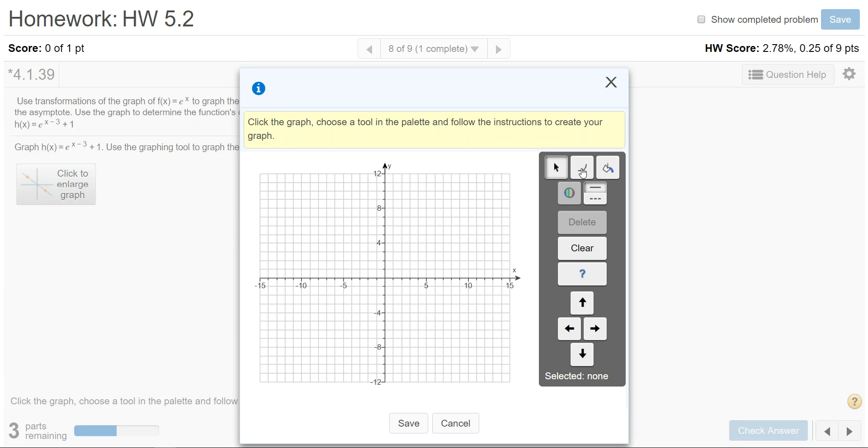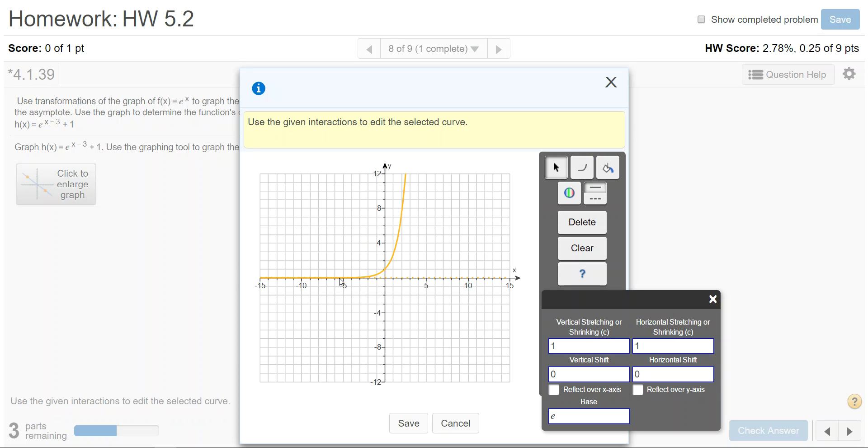So all I need to do is select the exponential tool and plot a point anywhere. It's going to automatically default when I click that. Notice that the dashed asymptote at y = 0 automatically appears, and the graph starts with the intercept at (0, 1).